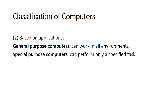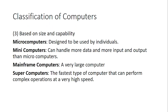Computers can also be classified based on applications — we have general purpose computers that can be used in all environments. Remember that in the early history of computers we only had special purpose computers that could execute only specific tasks. Based on size and capability, we have microcomputers designed for individual use, minicomputers that can handle more data and more input/output than microcomputers, and mainframe computers which are very large.